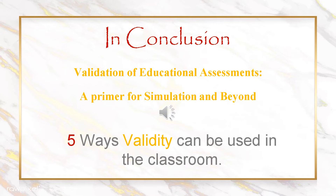There are two stages of argument in the validation process: an upfront interpretation use argument and a final validity argument. The steps in a practical approach to validation include: define the proposed interpretation, make an intended decision, define the interpretation use argument, prioritize needed validity evidence, identify suitable instruments and if needed create a new instrument, appraise existing evidence and collect new evidence as needed, formulate or synthesize the validity argument in relation to the interpretation use argument, and make a judgment — does the evidence support the intended use?